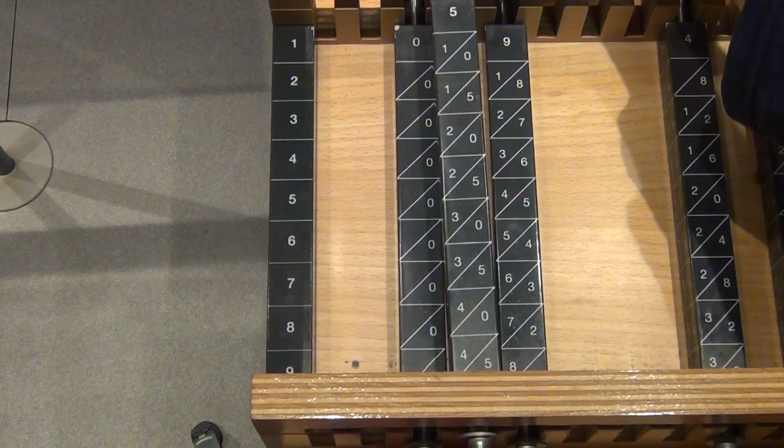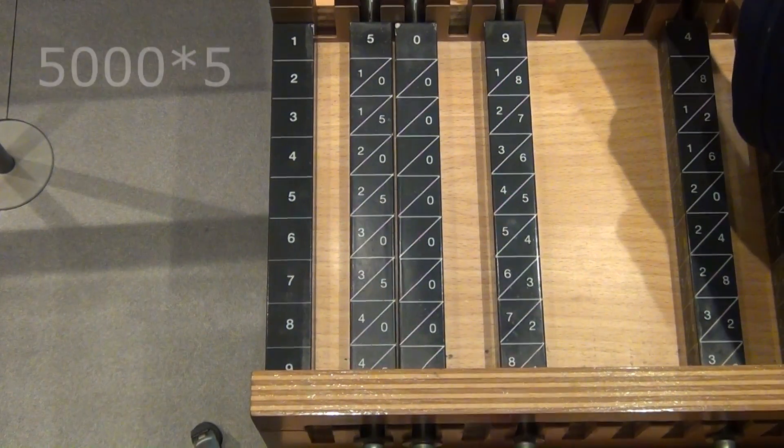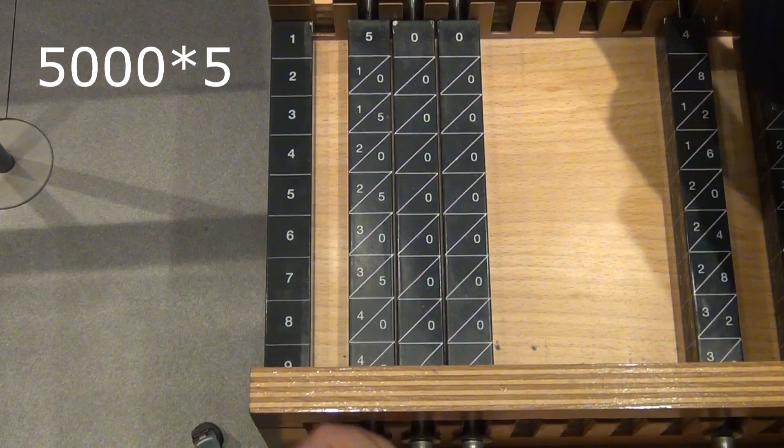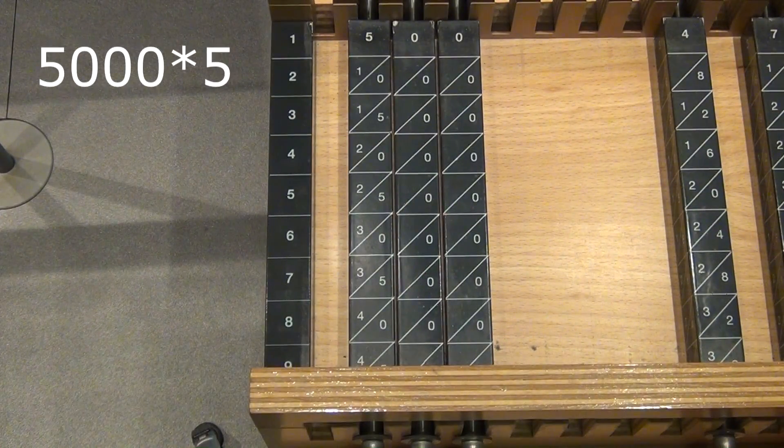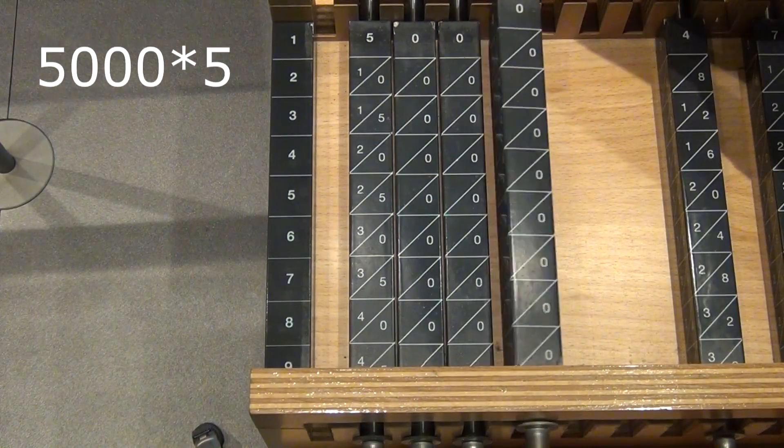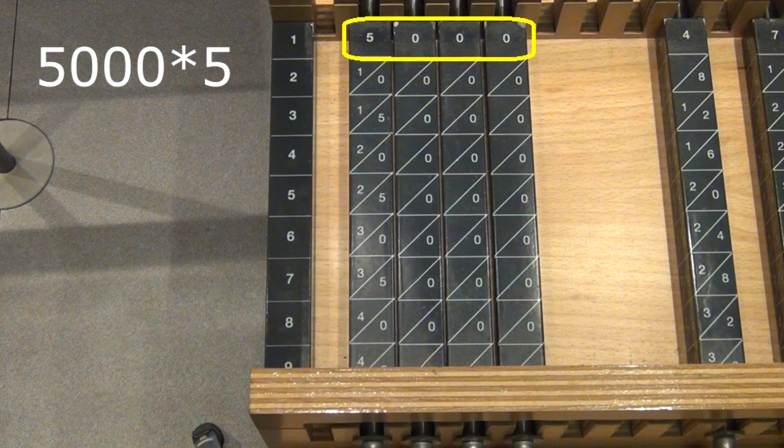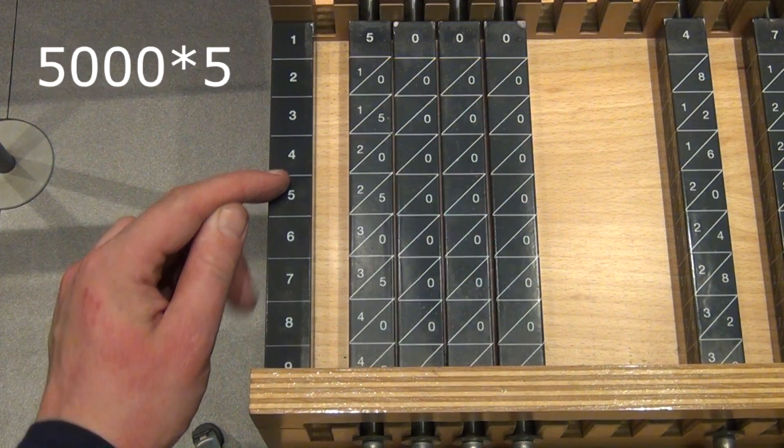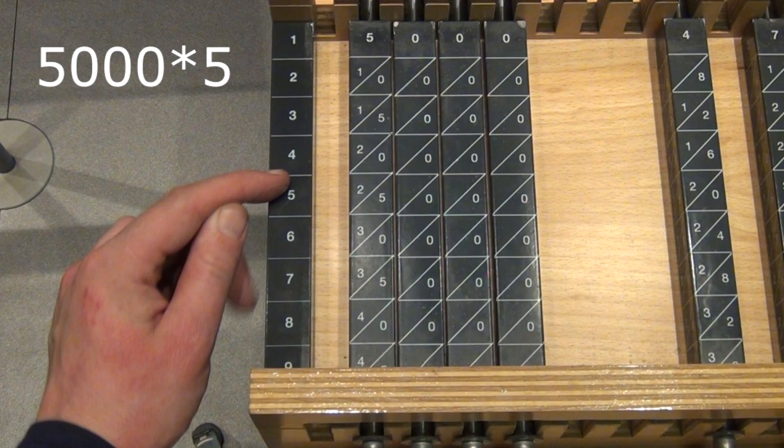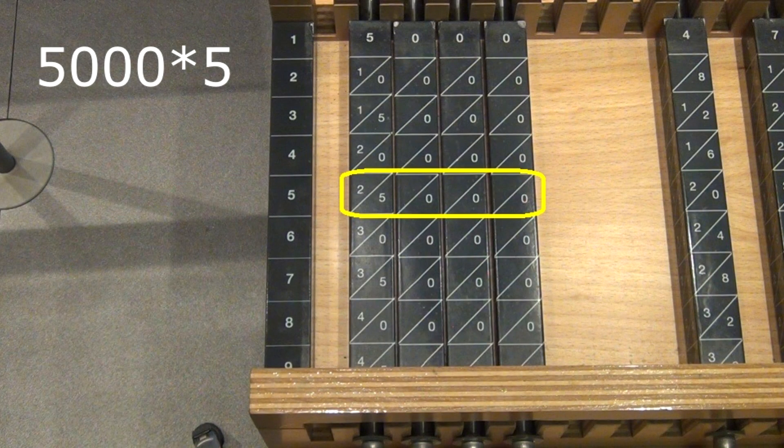We start with something simple. Let's say we want to multiply 5000 by 5. What we do is that we order the rods by the numbers on the top so that we have a 5000 right here. Now we go to row 5 because we want to multiply by 5. And you can simply read off the result. As expected it is 25000.